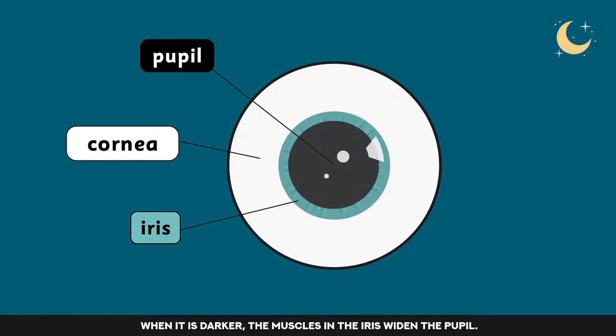When it is darker, the muscles in the iris widen the pupil. This increases the amount of light which can enter the eye.